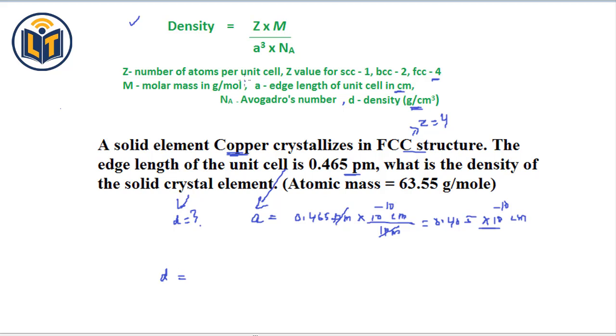Density D is equal to Z. Z is equal to 4 because there is FCC structure, multiplied by atomic mass. Here we have in grams per mole, atomic mass is given 63.55 and it is in grams per mole.